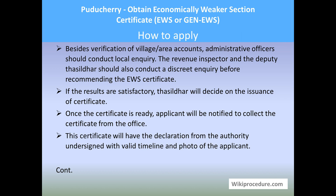Besides verification of village or area accounts, administrative officers will conduct a local inquiry on the applicant. The revenue inspector and the deputy Tasildar will conduct a discreet inquiry before recommending the EWS certificate. If the results are satisfactory, the Tasildar will decide on the issuance of the certificate. All these due diligence steps are taken to reassure that the eligibility criteria are met. Once the certificate is ready, the applicant will be notified to collect it. The certificate will carry a declaration from the authority, a valid timeline, and a photo of the applicant.